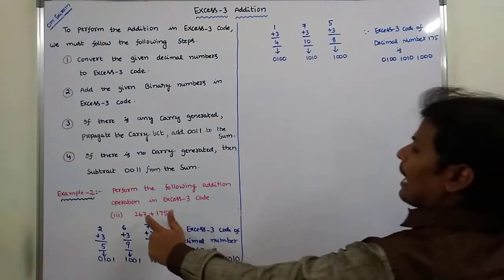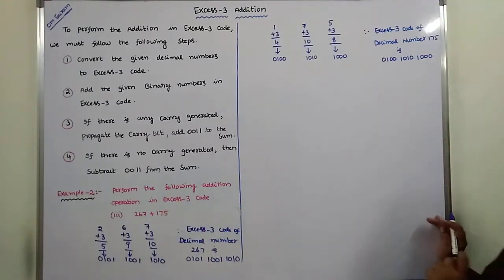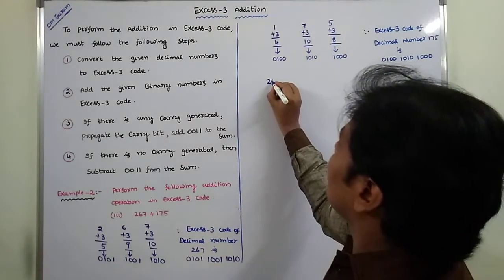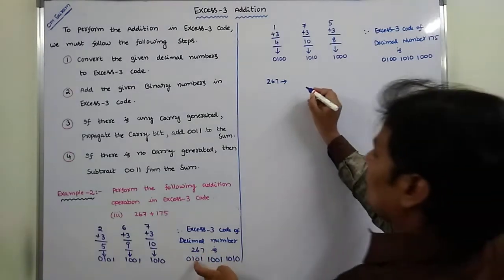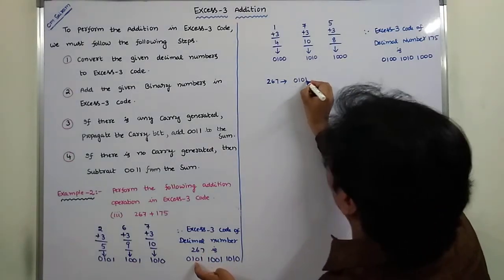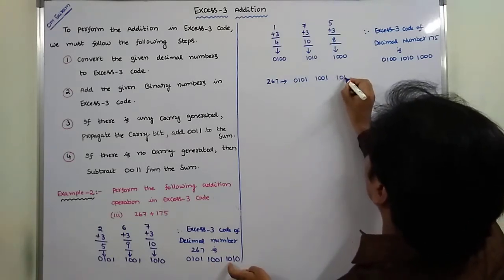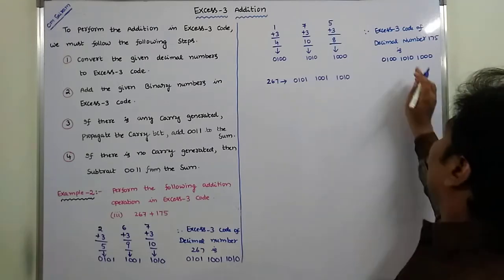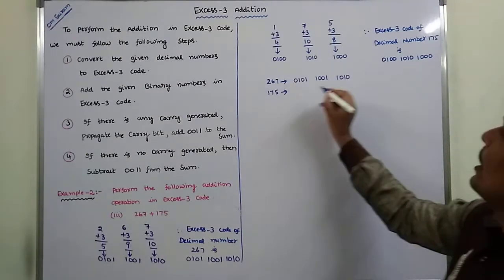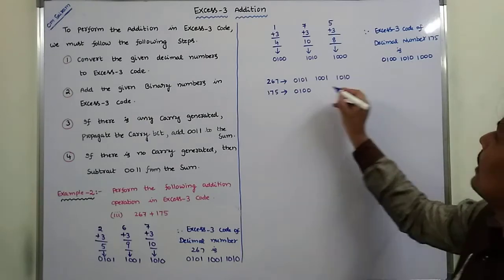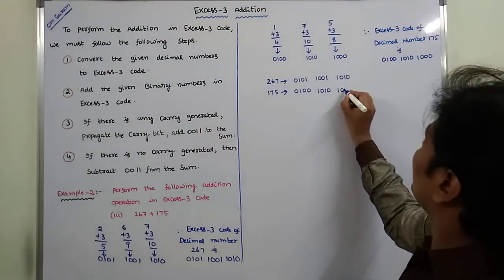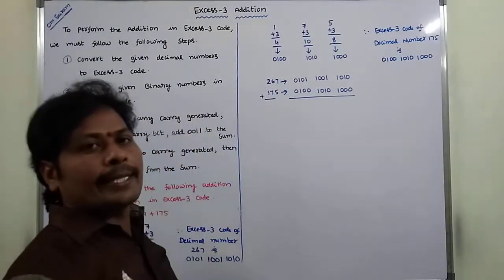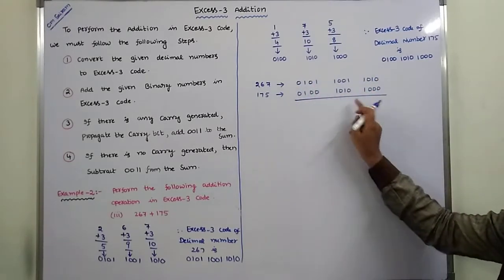Once we have the XS3 code of 267 and the XS3 code of 175, we have to add the two XS3 code numbers in binary. The XS3 code of 267 written in 4-bit groups is 0101, 1001, 1010. The XS3 code of 175 is 0100, 1010, 1000.